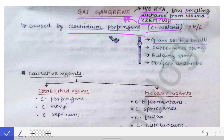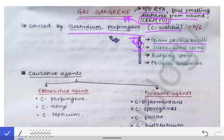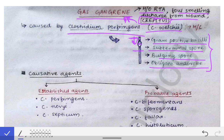Clostridium perfringens is a gram-positive bacillus. It has a sub-terminal spore — meaning the spore is located just below the terminal end of the bacteria. It is a bulging spore, meaning its diameter is more than the diameter of the bacteria itself, so it bulges out. And it is an obligate anaerobe. These four characteristics are the most important to remember.